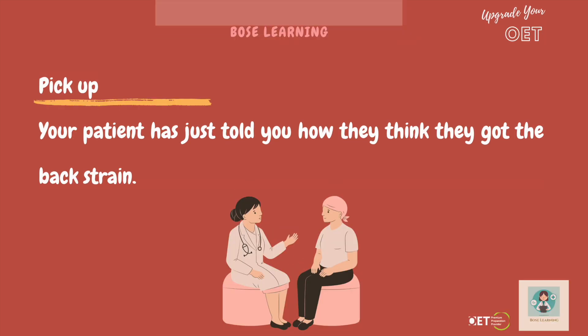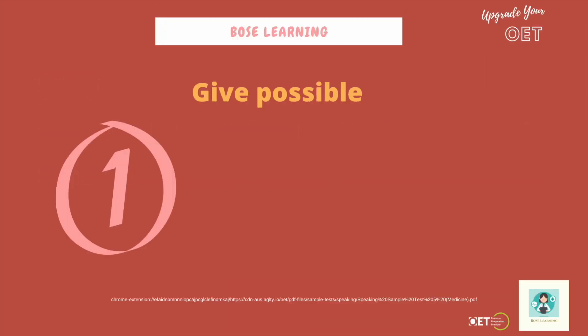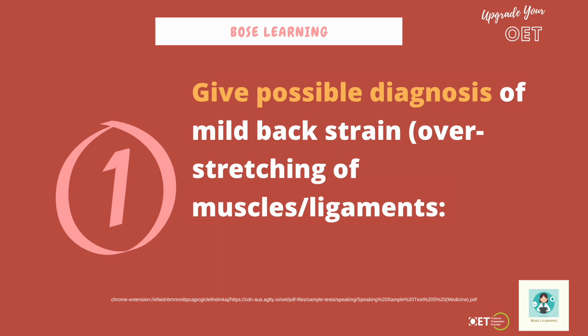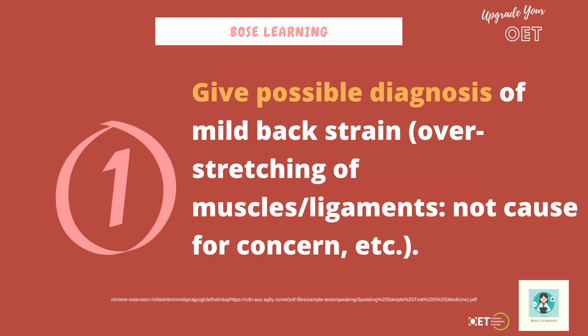The first task I'd like to look at is this one: you've been asked to give the possible diagnosis of mild back strain — overstretching your muscles or ligaments — and this is not a cause for concern. I'm going to give you 30 seconds to make some notes. Think about how you could begin this part of the role play. Your 30 seconds starts now.